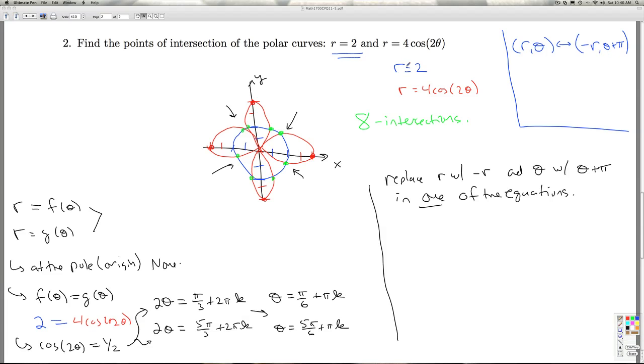So as I look at these examples, it doesn't matter which one I pick. I'm going to do this one. I'm going to replace r with negative r and theta with theta plus pi. Well, there's no theta to replace, so I just end up replacing r with negative r.